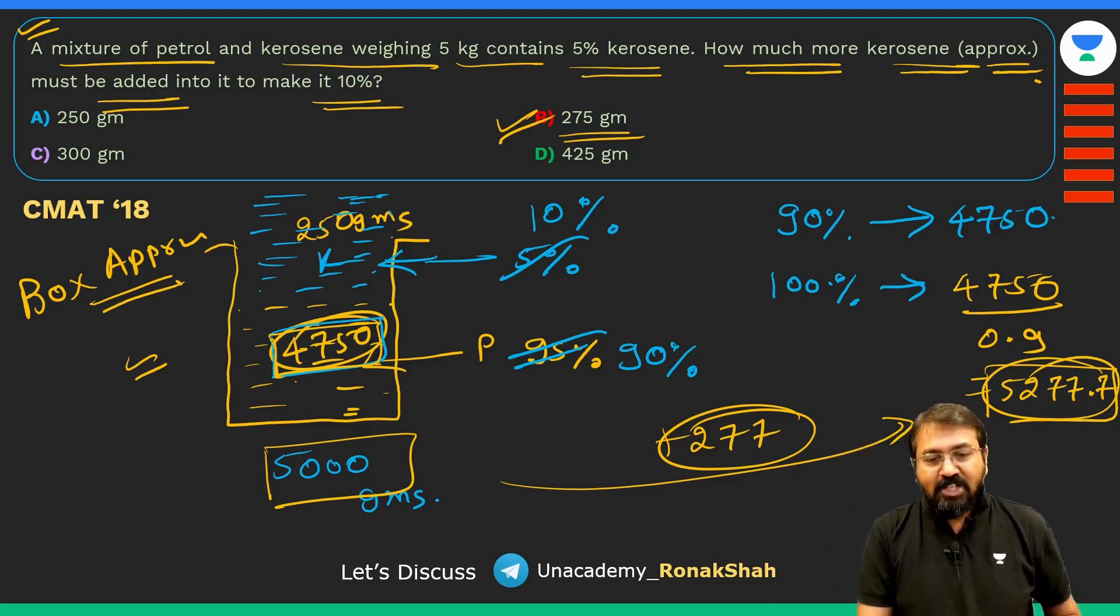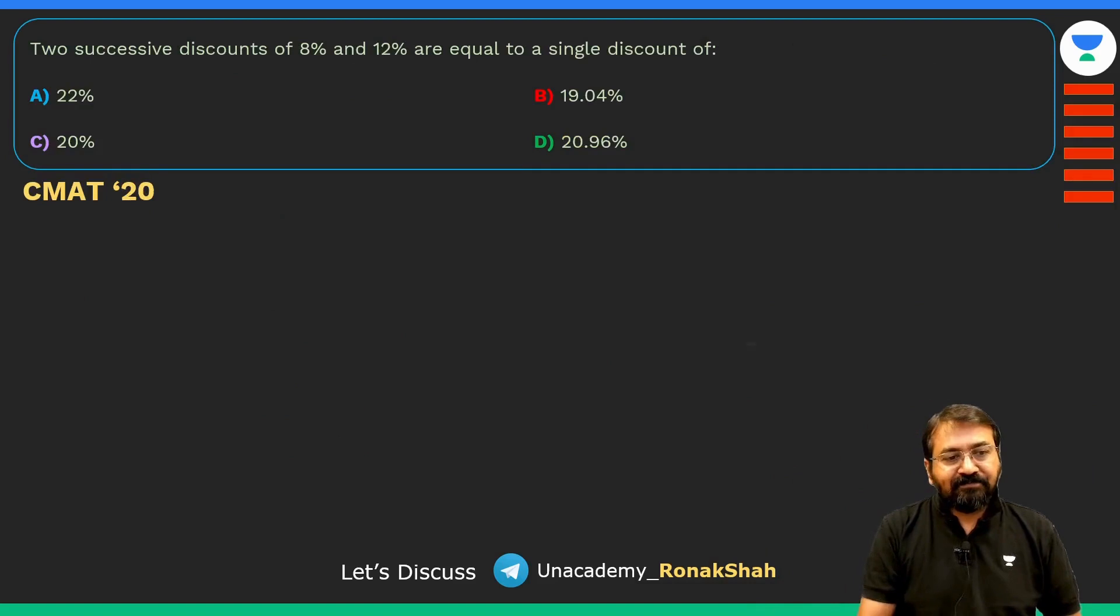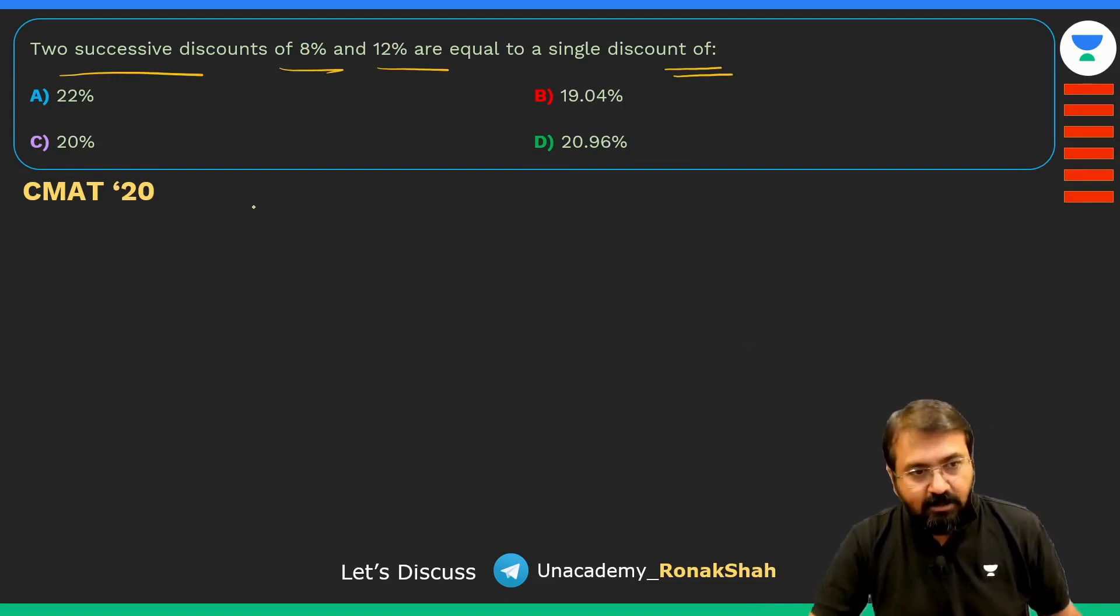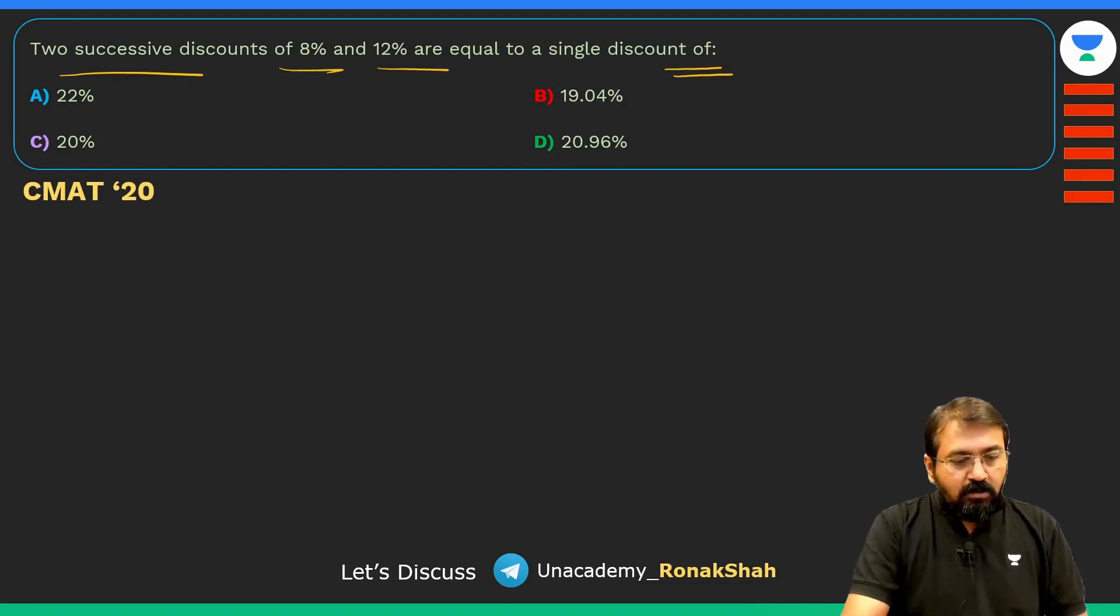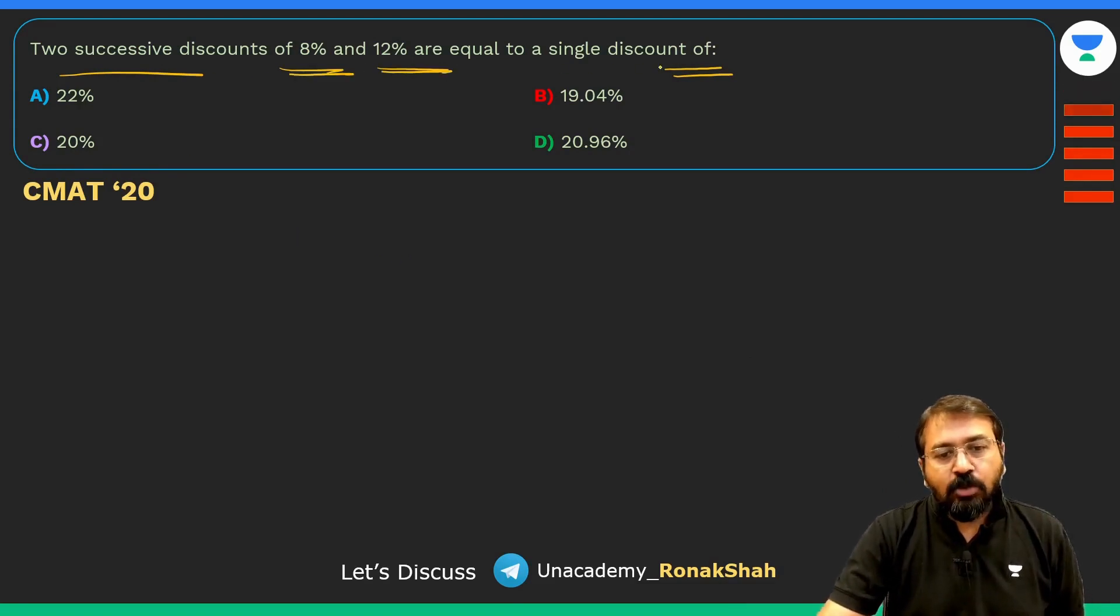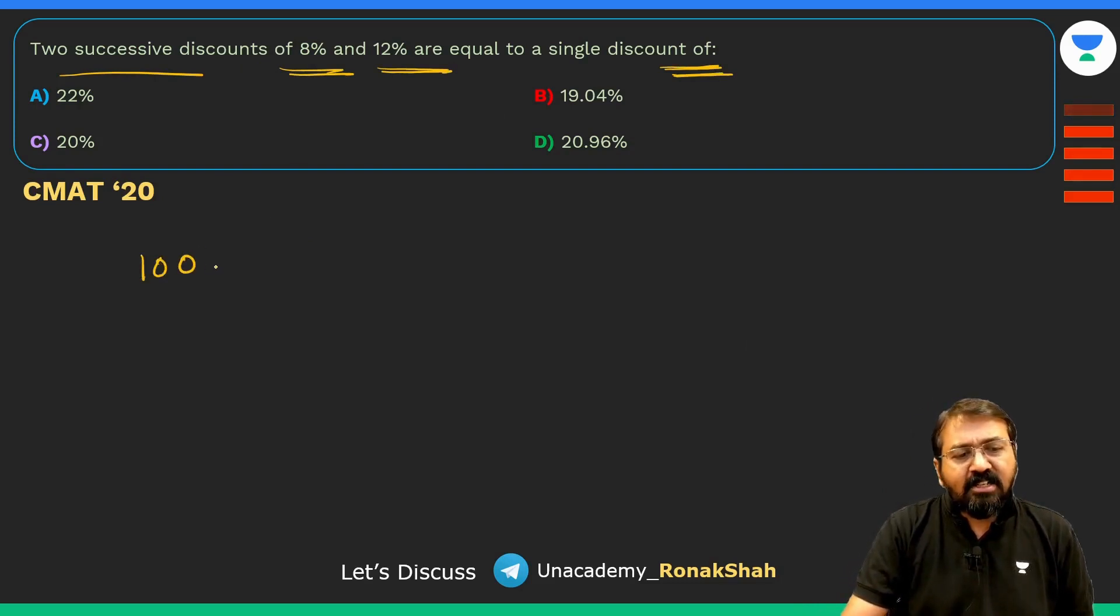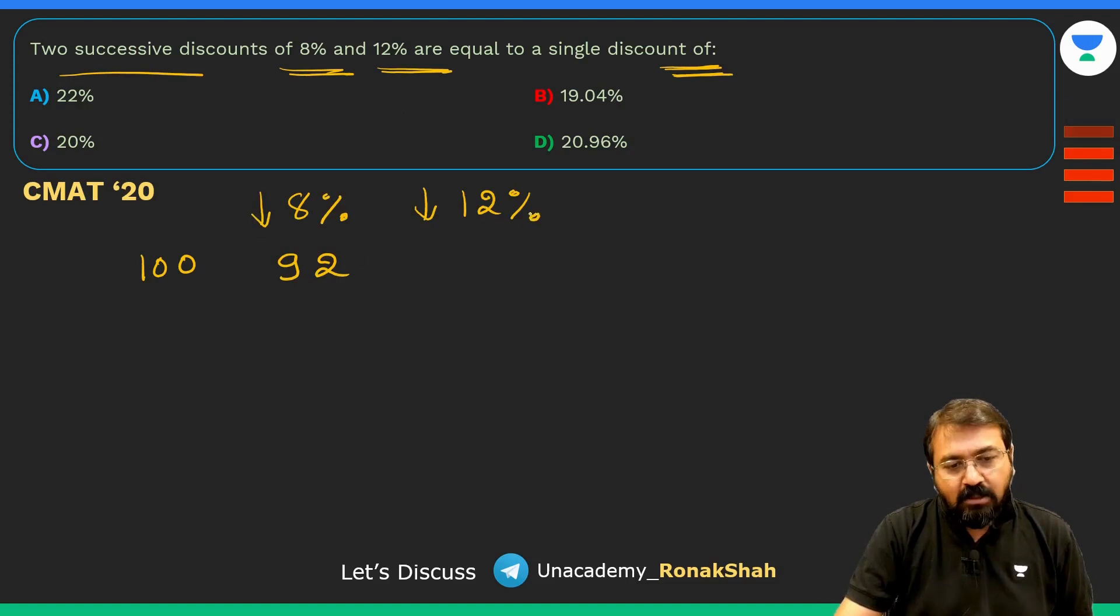Let's go to the next part. Two successive discounts of 8% and 12% are equal to a single discount of how many percent? Let's do one thing, let's take number as 100. If I reduce by 8% it will become 92, and further I need to reduce by 12%.